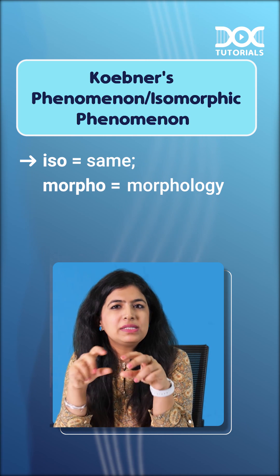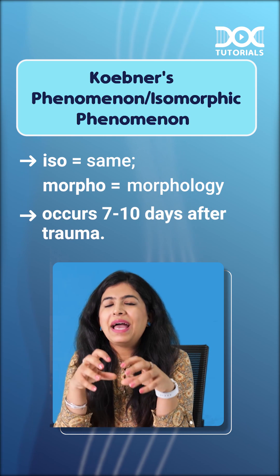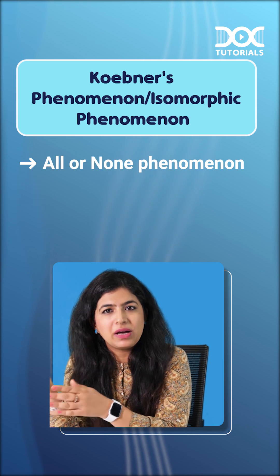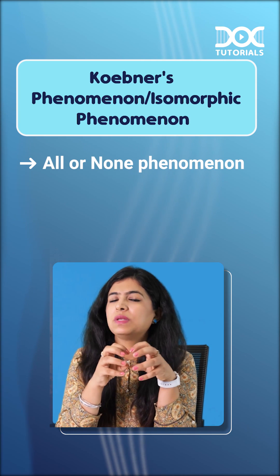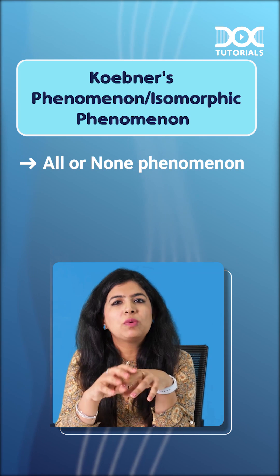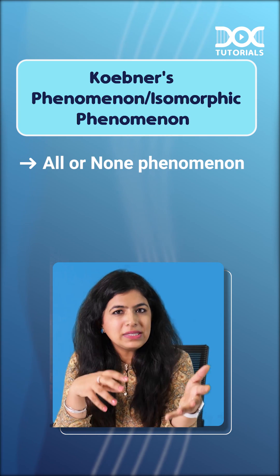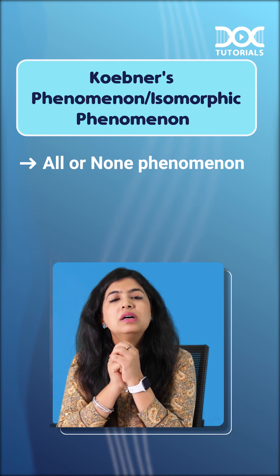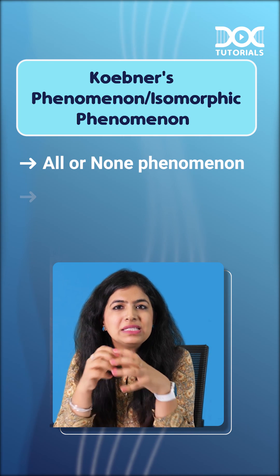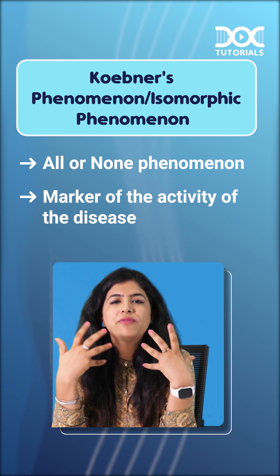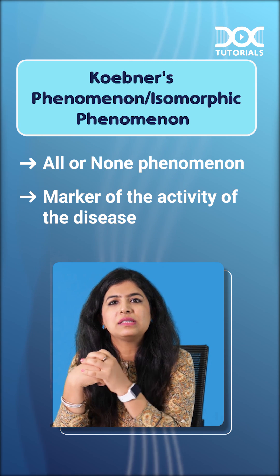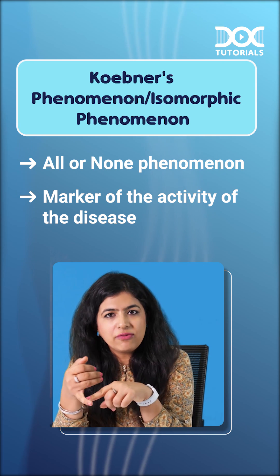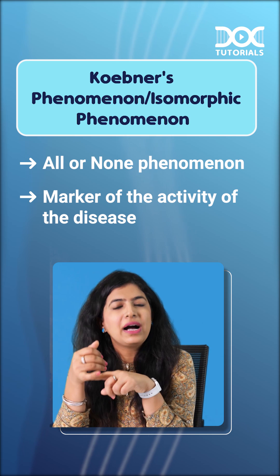This generally happens within seven to ten days of trauma. This is an all-or-none phenomenon — meaning if the Koebner phenomenon has to happen, it will happen at all sites of trauma, or it won't happen at all. Further, the Koebner phenomenon is a marker of disease activity — if the disease is active and severe, there are higher chances of the Koebner phenomenon occurring.